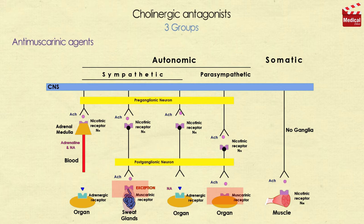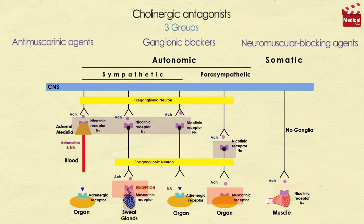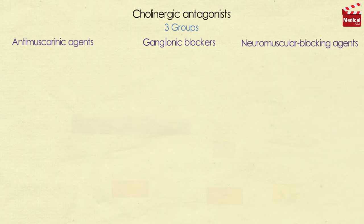Antimuscarinic agents are also known as anticholinergic agents or parasympatholytics, and they are the most clinically useful group of the cholinergic antagonists. The second group is the ganglionic blockers; these agents block the nicotinic receptors of the sympathetic and parasympathetic ganglia — clinically they are the least important. The third group is the neuromuscular blocking agents, mostly nicotinic antagonists; they interfere with transmission of efferent impulses to skeletal muscles.